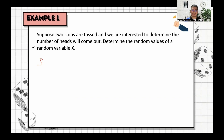Let's have example number one. Suppose two coins are tossed and we are interested in determining the number of heads that come out. Determine the random values of random variable X. To solve this problem, the first thing we should do is find the sample space, denoted as capital letter S.